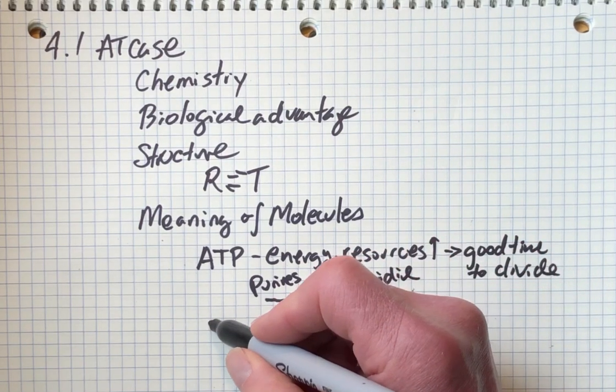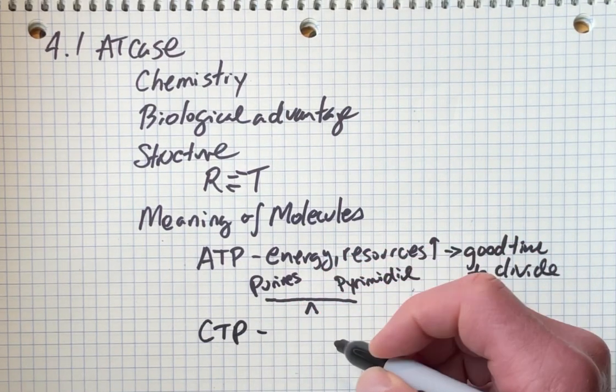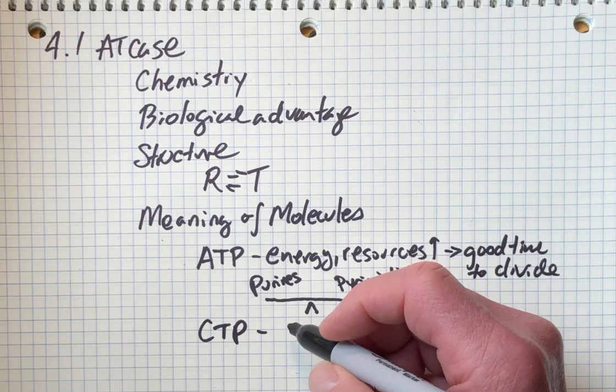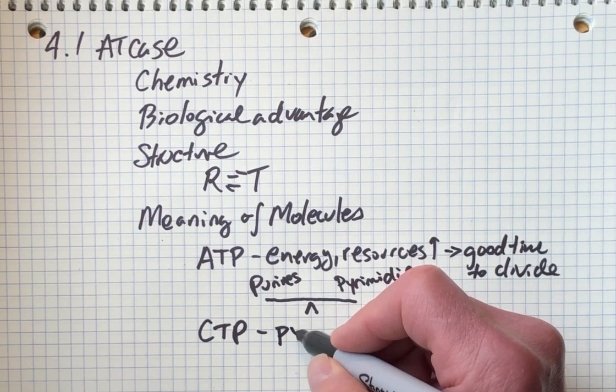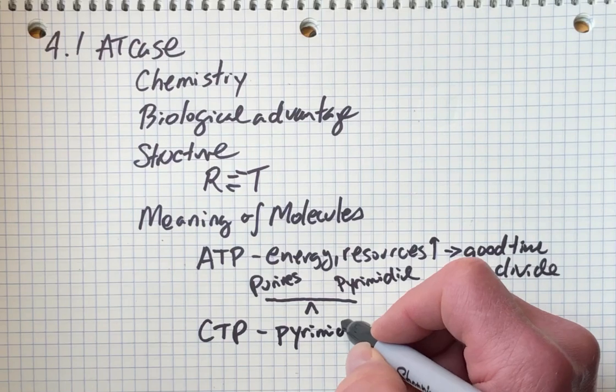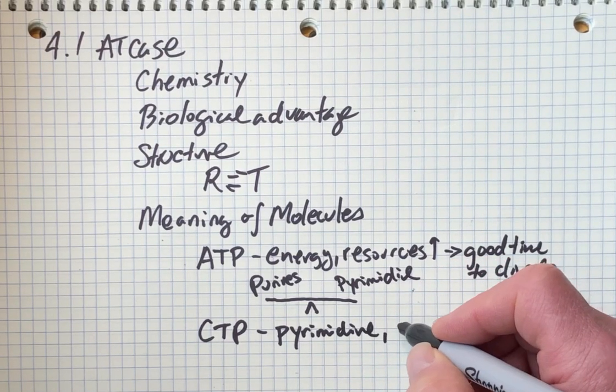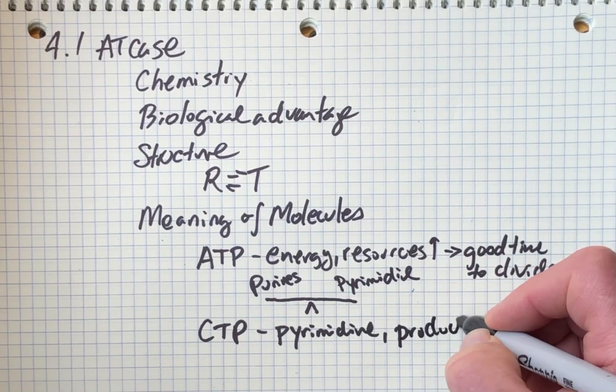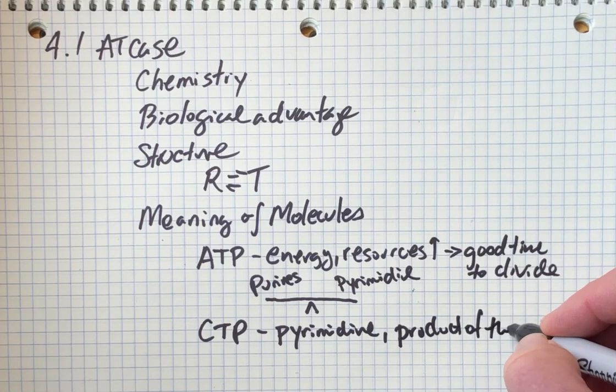CTP, in the context of ATCase, is a pyrimidine. It's also the product of the whole pathway.